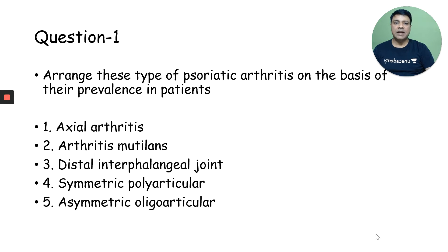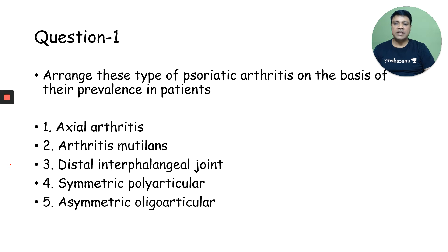Arrange these types of psoriatic arthritis on the basis of their prevalence in patients. Your choices are: axial arthritis, arthritis mutilans, distal interphalangeal joint involvement, symmetrical polyarticular arthritis, and asymmetrical oligoarticular arthritis. Arrange them on the basis of their prevalence in patients.